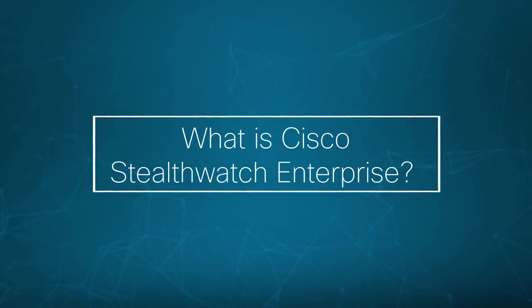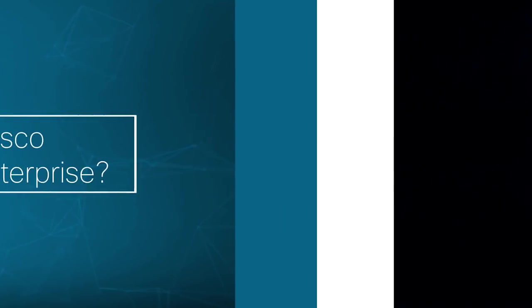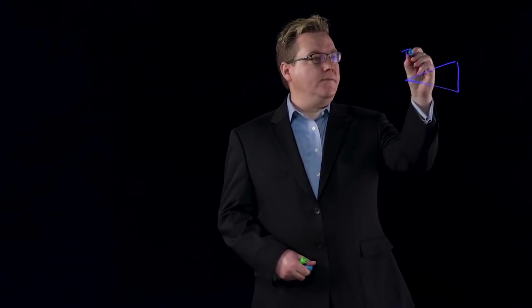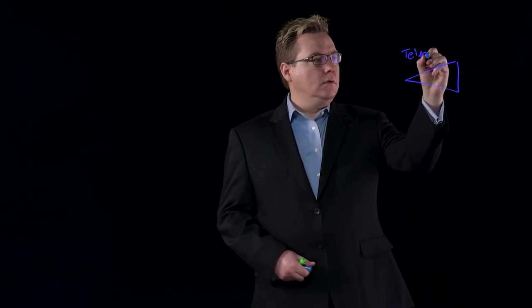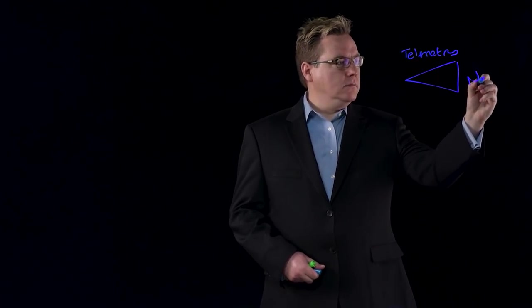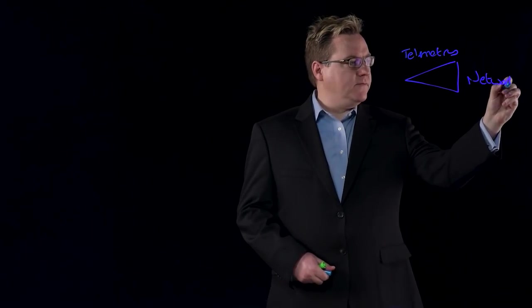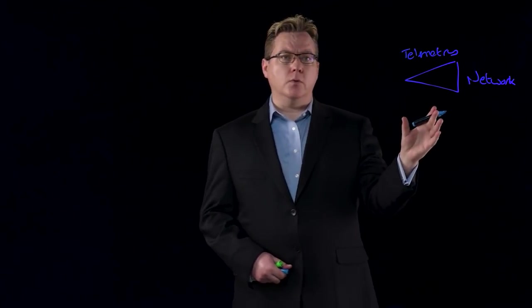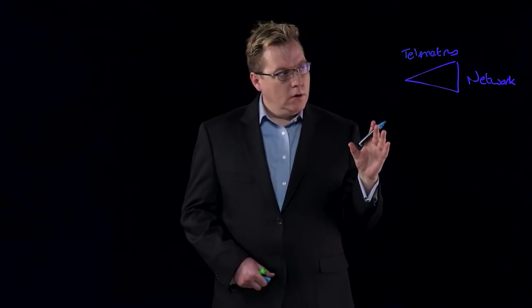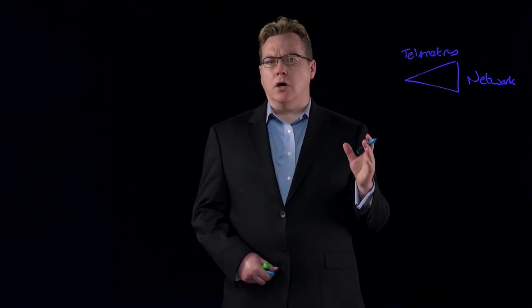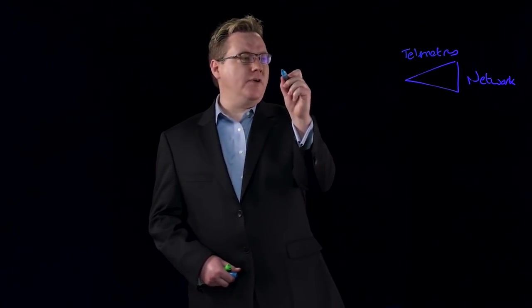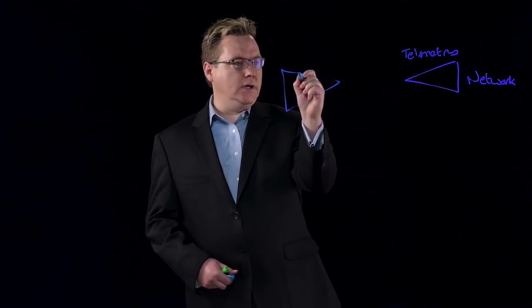So let's talk about Stealthwatch Enterprise and its architecture. So what is it? Well, in a nutshell, it's a way of taking information from the network, telemetry, and that information comes in from various forms into our network. Now, information on its own without any context has no meaning. So it's very important that we add in context to this.